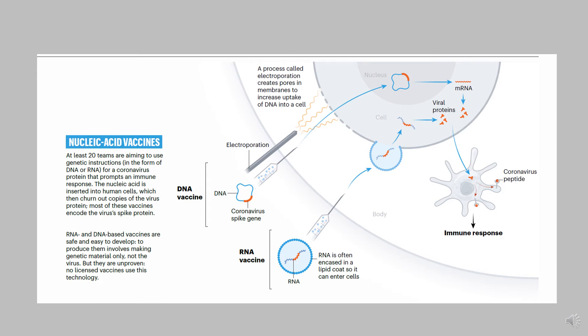The next kind of vaccine that I'd like to talk about is nucleic acid vaccines. Nucleic acid vaccines can be of two types, a DNA vaccine or an RNA vaccine. Both DNA and RNA vaccines have advantages in terms of being very safe and easy to develop. They only involve containing the genetic material.